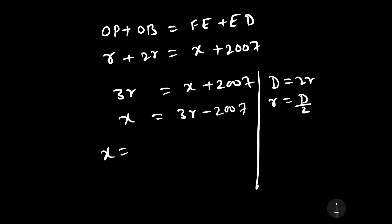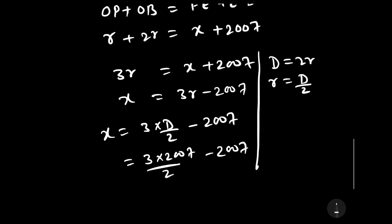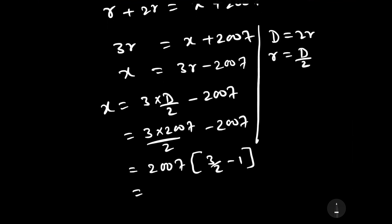Therefore, we can write x equals 3 times diameter upon 2 minus 2007. The value of diameter is 2007. Therefore, we can write 3 times 2007 upon 2 minus 2007. Let us take common as 2007. Then this will equal 2007 times (3 by 2 minus 1) and this will equal 2007 by 2. This is the value of x and this is our required answer.